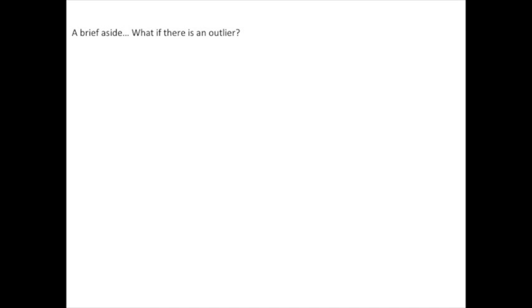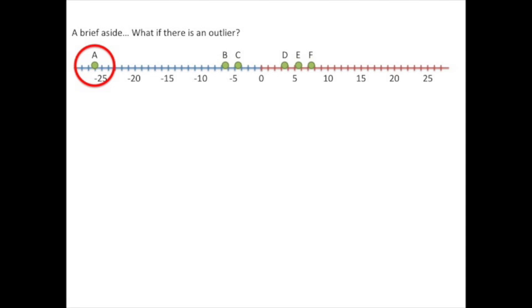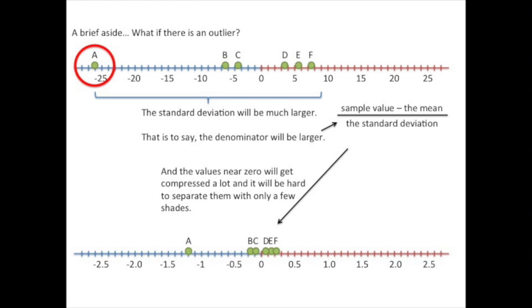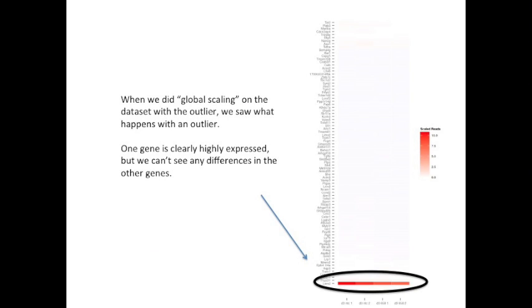Another brief aside, what if there is an outlier? In this example, sample A is our outlier. Everything else is relatively tightly clustered. In this case, the standard deviation is going to be much larger than what we had before. That is to say, the denominator will be much larger and the values near 0 will get compressed a lot and it will be hard to separate them with only a few shades.